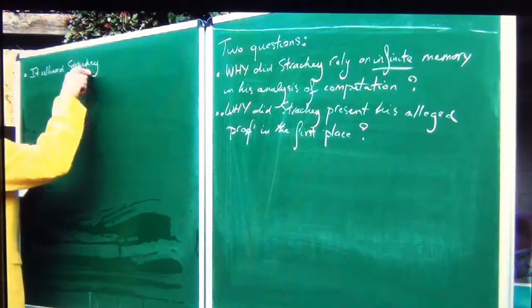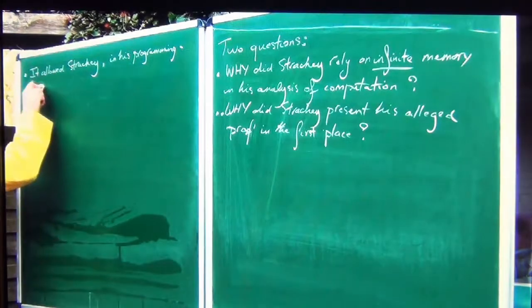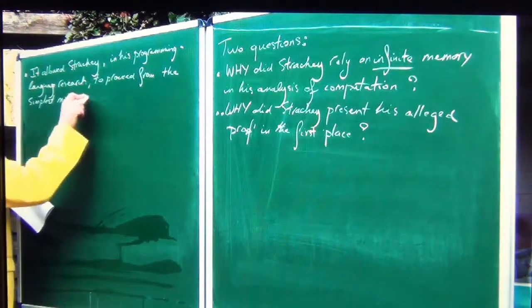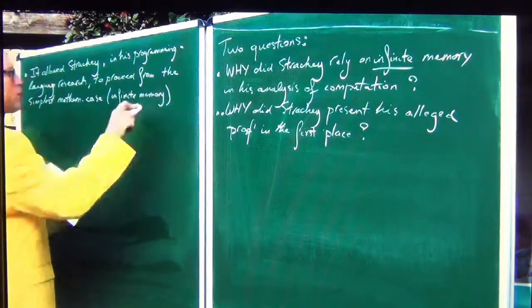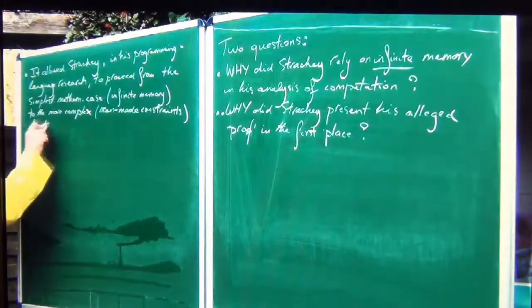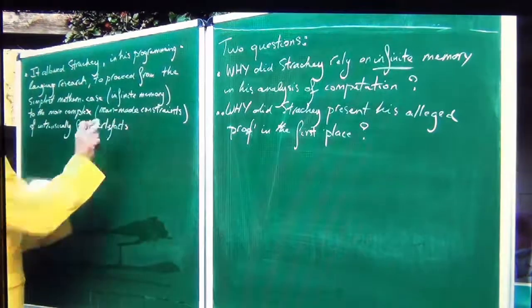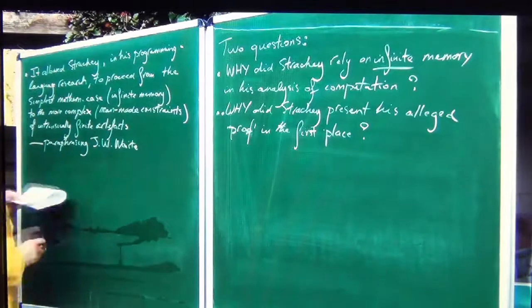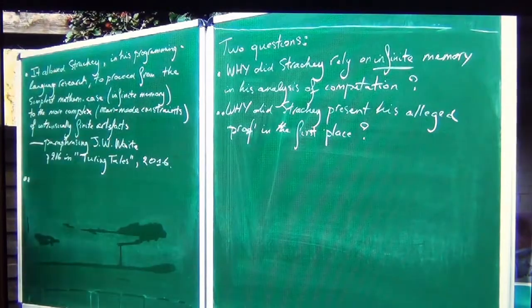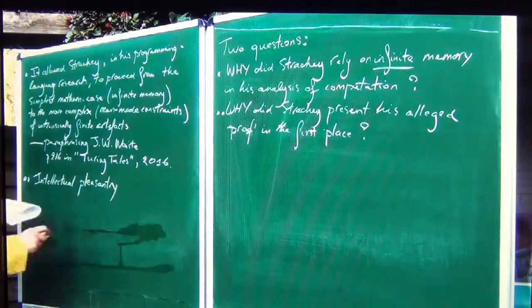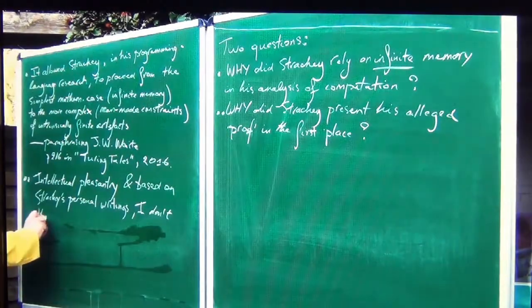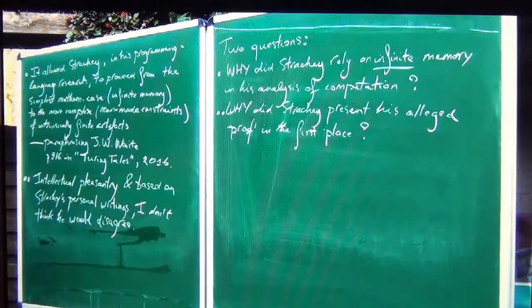Number one: it allowed Strachey, in his programming language research, to proceed from the simplest mathematical case — infinite memory — to the more complex man-made constraints of intrinsically finite artefacts. I'm paraphrasing from page 216 in my Turing Tales book published in 2016. The second answer: intellectual pleasantry. That's why Strachey presented his impossible program, and based on Strachey's personal writings, I don't think he would disagree. I'm referring to the Bodleian Library archives in Oxford, which I visited in 2013.